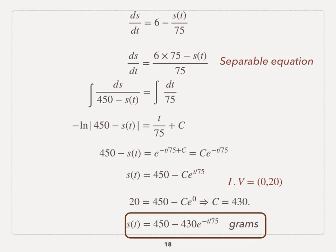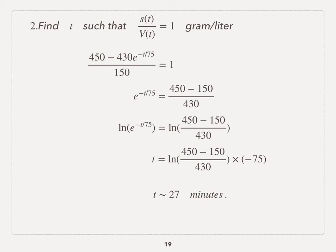We get s. Now to answer the second question: find t such that the concentration equals 1. Now we know s, we just need to plug the function that we found for s over v, which is always 150, and set it equals to 1. In this case, you can try to move e to the negative t over 75 to one side, and then raise both sides and then take the natural log of both sides to isolate t and to solve for t.